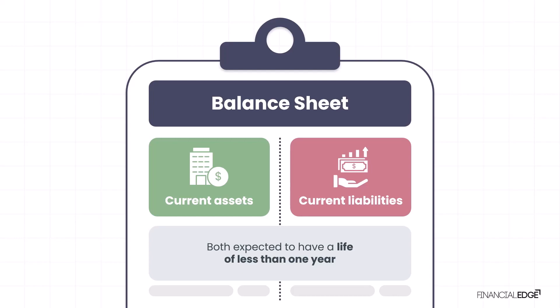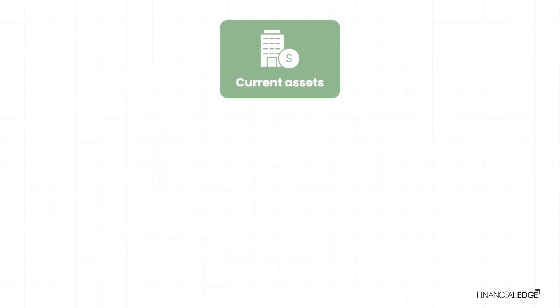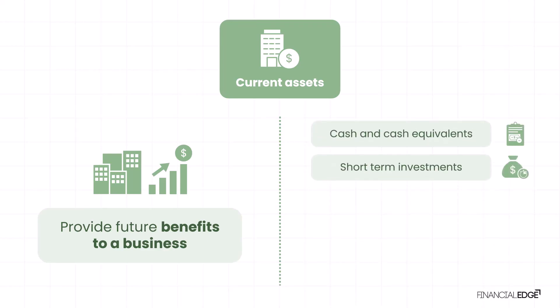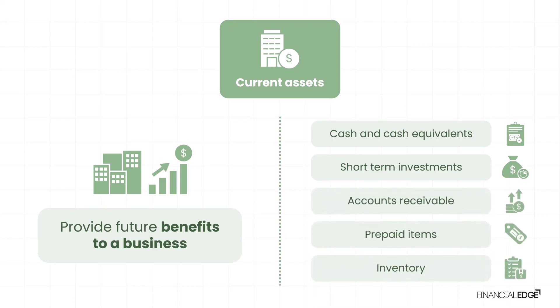Let's look into current assets first. First of all, it's an asset, and that name means that it will provide future benefit to a business. Examples include cash and cash equivalents, short-term investments, accounts receivable, prepaid items, and inventory. All of them are assets that you own and will give you future benefit. If you prepaid for something, that means you're going to get that something in the future. Accounts receivable means you're going to receive something from your customers in the future.